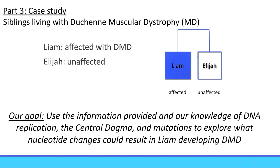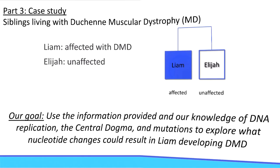For our case study, we're going to talk about two siblings who live with Duchenne muscular dystrophy — Liam is affected, whereas Elijah is unaffected. We're going to use information provided along with our knowledge of DNA replication, the central dogma, and mutations to explore what nucleotide changes resulted in Liam developing muscular dystrophy but not Elijah. This is the end of day one of mutations. For day two, we're going to focus entirely on the case study. Thanks everyone, and I'll catch you on the flip side.